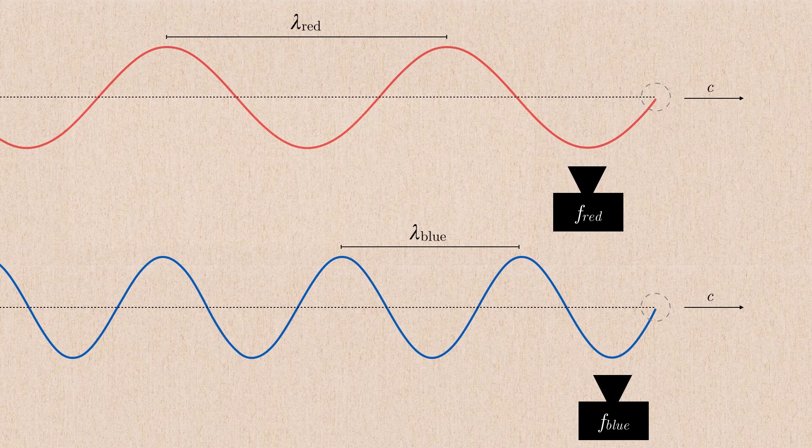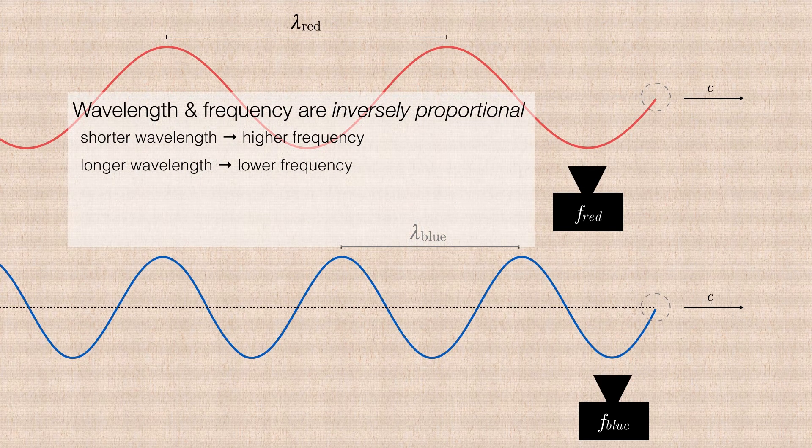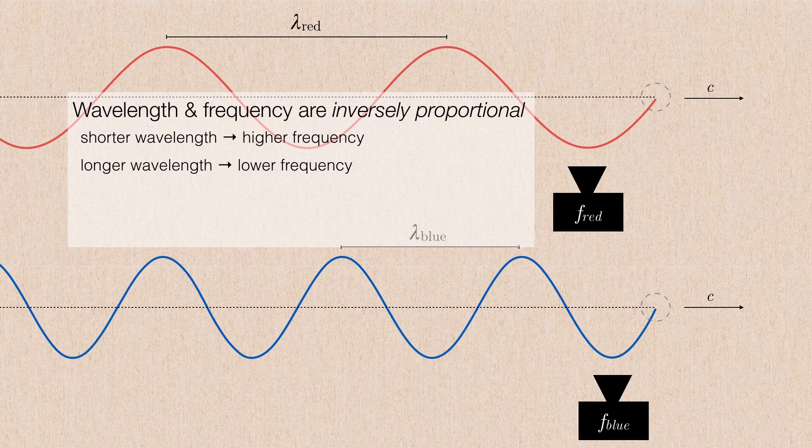So the key thing to remember here is that wavelength and frequency are inversely proportional. That's just a nice way of saying the shorter the wavelength, the higher the frequency, and vice versa. Now, if we want to express this mathematically, we just simply write this as the frequency is proportional to the inverse of the wavelength, or the wavelength is proportional to the inverse of the frequency.